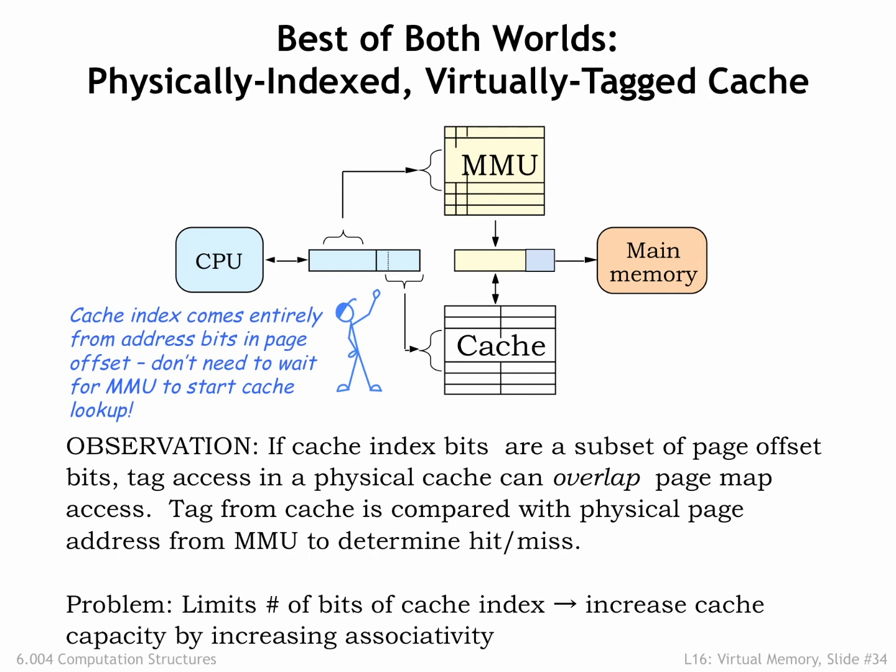One way to increase the capacity of the cache is to increase the number of cache lines and hence the number of bits of address used as the line number. Since we want the line number to fit into the page offset field of the virtual address, we're limited in how many cache lines we can have. The same argument applies to increasing the block size. So to increase the capacity of the cache, our only option is to increase the cache associativity, which adds capacity without affecting the address bits used for the line number.